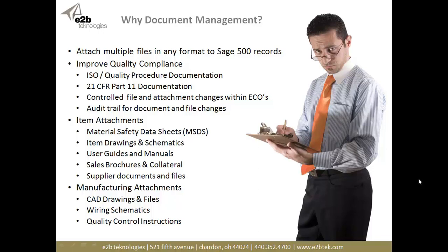For item attachments, if I'm in an item record, I need to see a lot of different things around that item. Wouldn't it be nice if you could see an MSDS sheet if you're distributing hazardous materials? Wouldn't it be nice if you could see an item drawing, a CAD drawing, or wiring schematic for the products you're manufacturing or reselling? User guides, manuals, sales brochures, collateral, videos, supplier documents — anything you can imagine could be attached against an item attachment record.